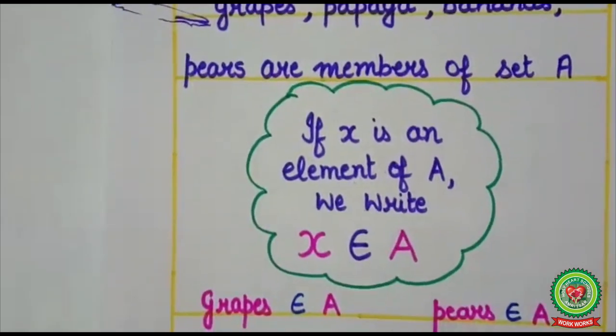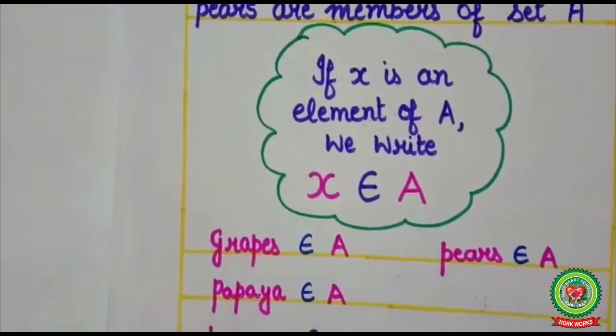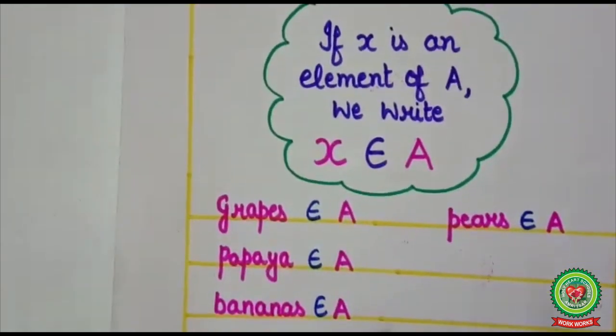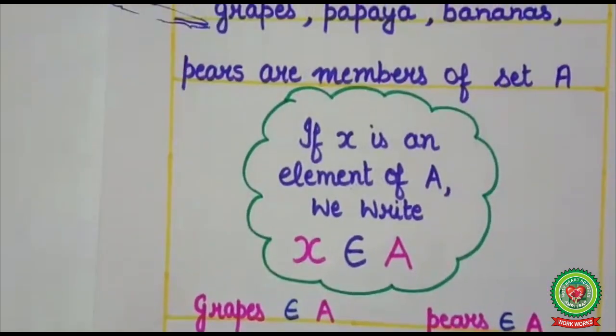So we will write here grapes belongs to set A, papaya belongs to set A. Similarly bananas, pears belongs to set A.